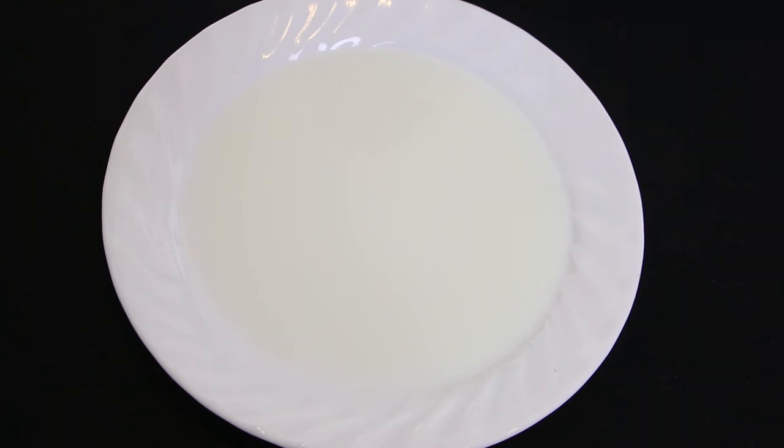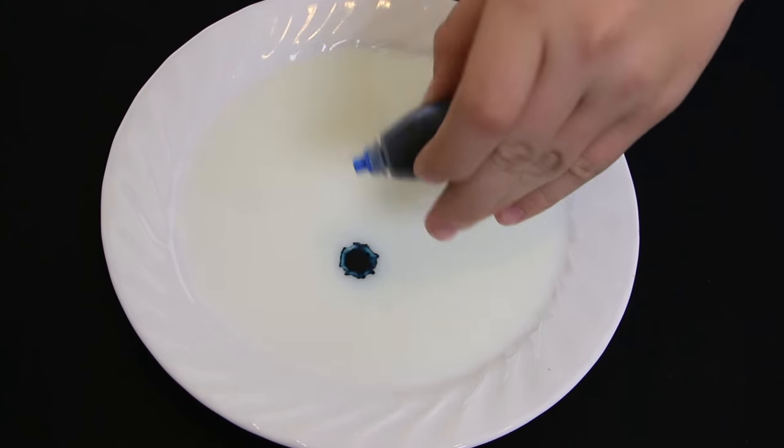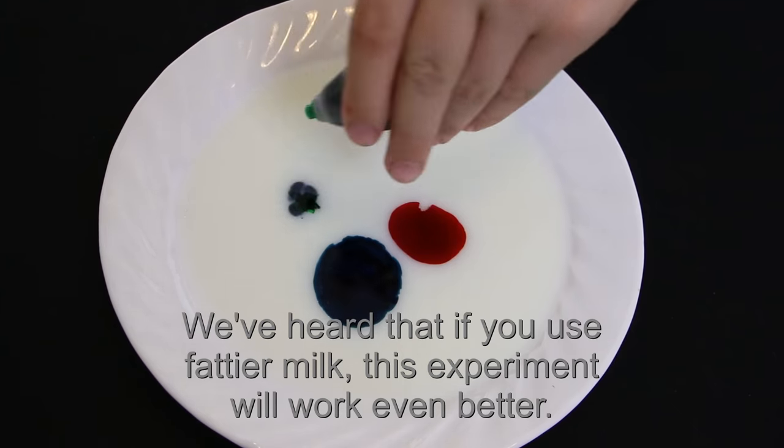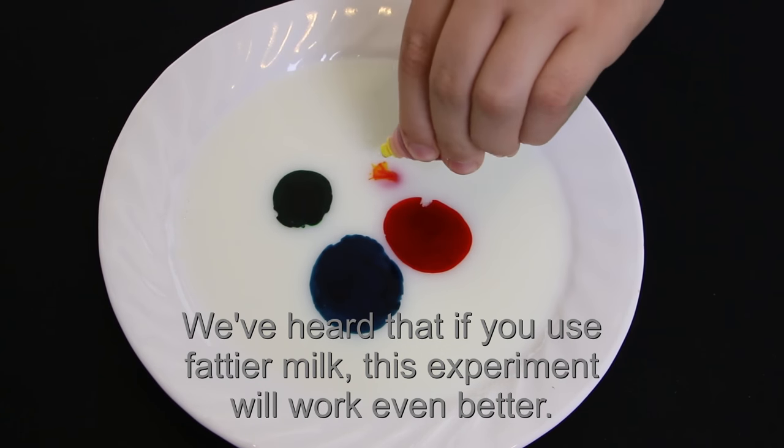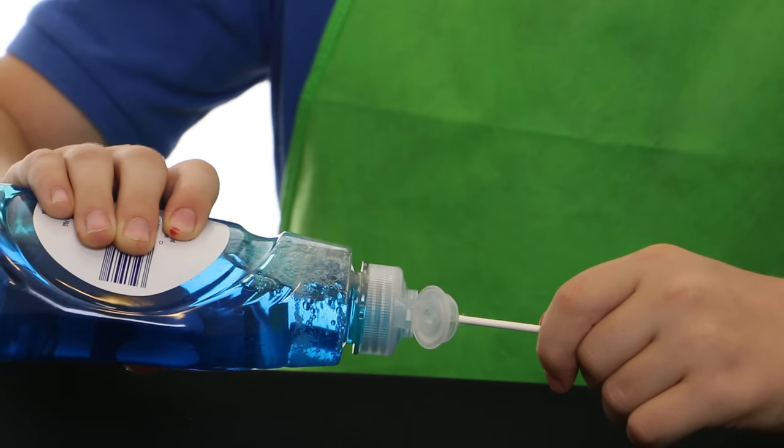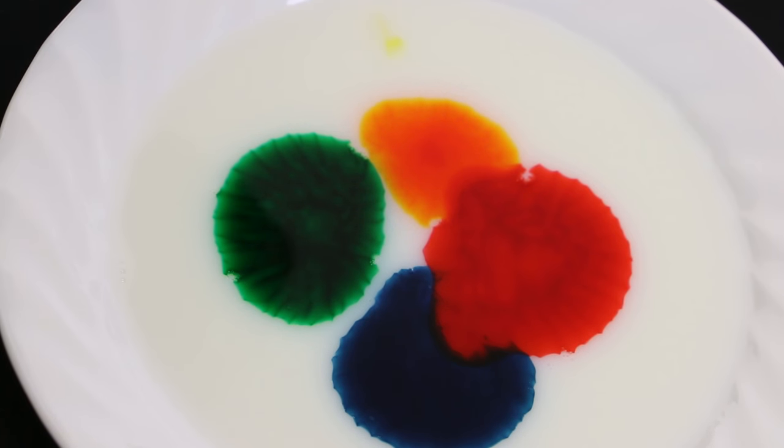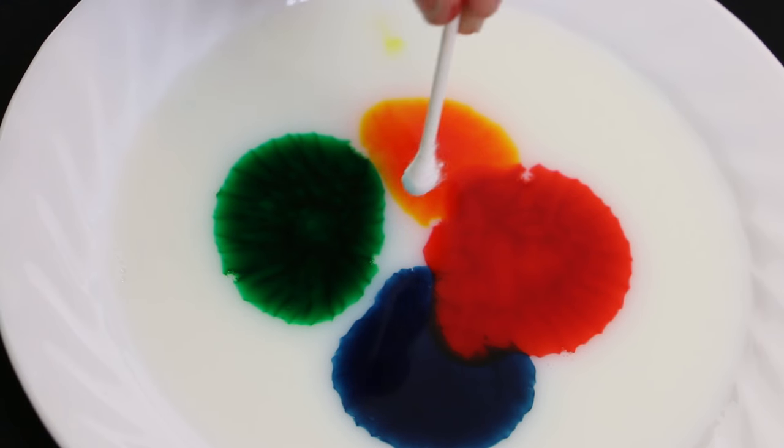After you put milk on your plate, add a few drops of food coloring. Carefully add soap to the tip of your q-tip. Put the tip of your q-tip in the middle of the colors.